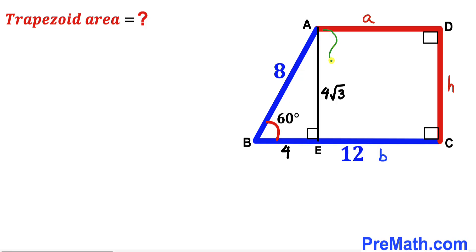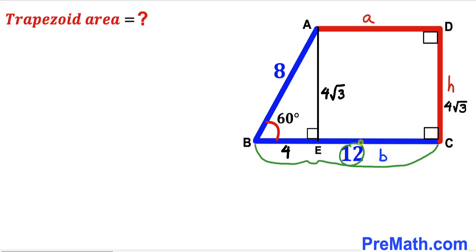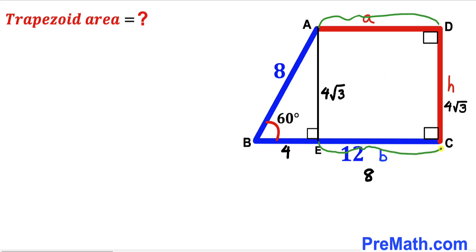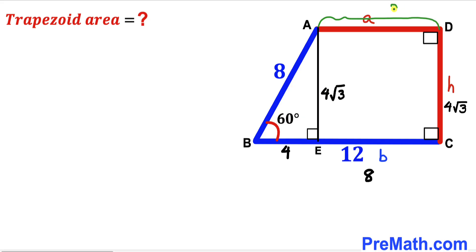We can observe that AE equals CD — both are heights of the trapezoid — so our height H is 4 times the square root of 3. The whole base BC is 12 units and BE is 4 units, so the remaining segment EC is 12 minus 4 equals 8 units. Since base AD equals EC, our base a value is also 8 units.